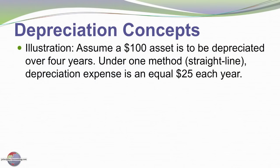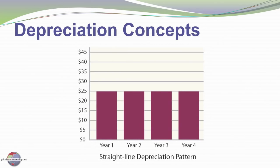Let's assume very simply we have a $100 asset with a four-year service life, and under straight line depreciation we'll allocate $25 to each accounting period. Graphically we see that our depreciation is uniform over each time period, and that may seem very logical.